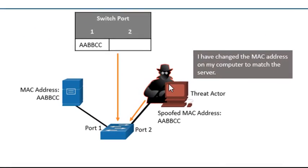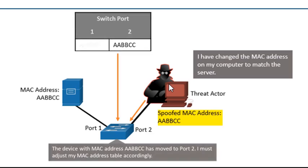What it comes down to here is our threat actor is connected to a switch on port 2. They see the MAC address of the server existing on port 1 — the switch currently understands that the server resides on port 1. But if the threat actor spoofs the MAC address of the server and communicates to the switch, the switch will learn that MAC address AABBCC — which was the server's MAC address — is now incoming on the ingress of port 2. Thus, the switch says: I understand that AABBCC has moved and now exists off of port 2.